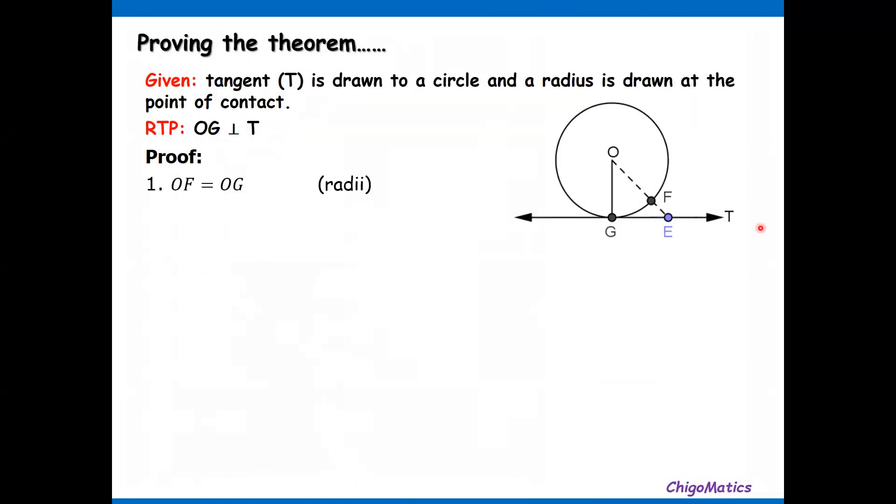The first thing is we see that OF equals OG because they are both radii. Then OF is less than OE. Why? Because OE equals OF plus FE.